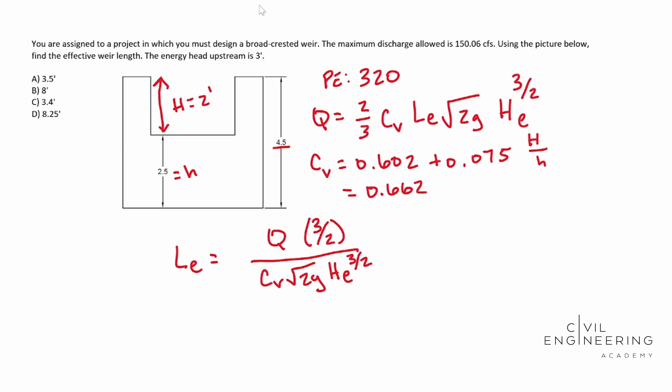Over your CV times the square root of 2G times HE to the 3.5 power. That's kind of the first obstacle for this problem: can you reorganize your unknowns to fit what you're solving for? And that's exactly what we just did right there.